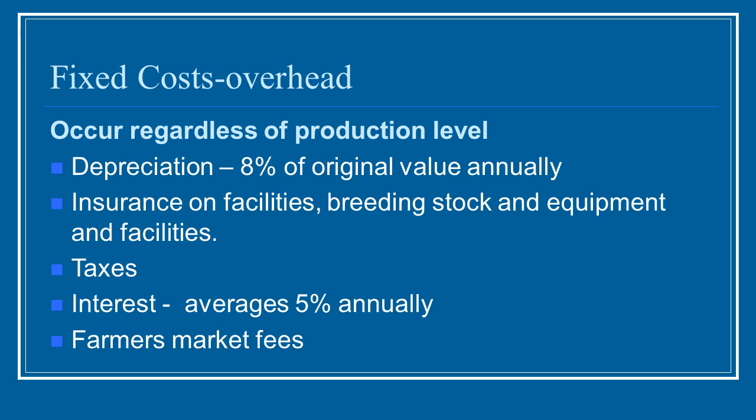Typical of any kind of budget, you're going to have to determine your fixed costs, which are essentially your overhead. These are what are going to occur regardless of production level — whether you do 100 chickens or 500 chickens, or three sheep or 500 goats, these things stay the same. So your depreciation, your insurance on the facilities, the taxes you pay, the interest, and if you are going to do farmers markets, the booth fees. These will stay the same whether you sell $5 in products or $2,000 in products.